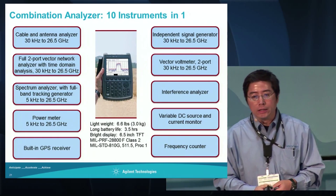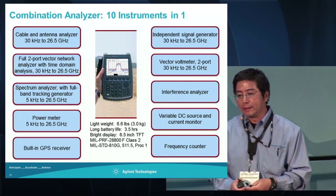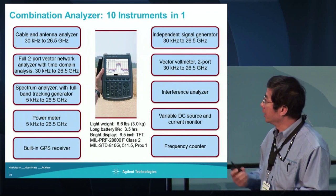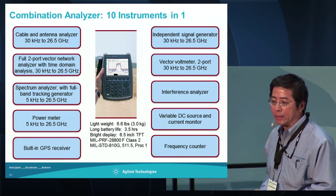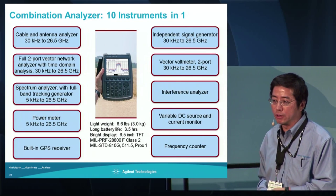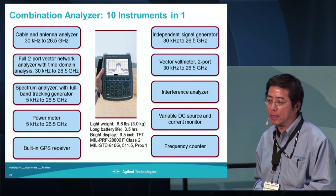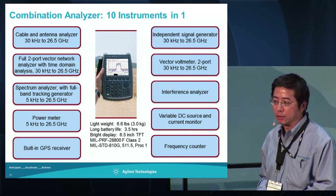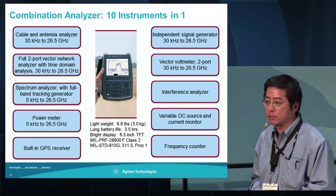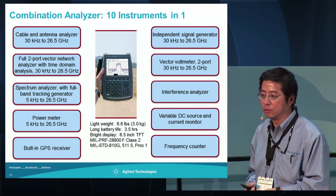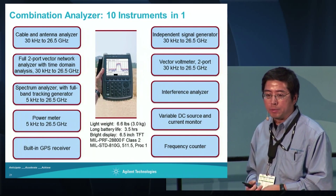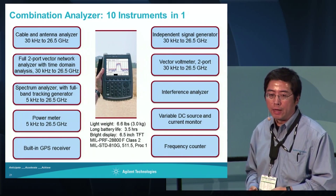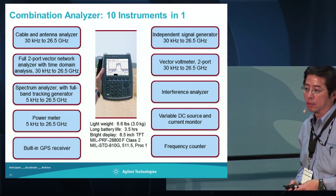Last but not least, on this show floor, this is actually the first time we present our instrument. This is a 26.5 GHz FieldFox cable antenna analyzer, spectrum analyzer, and power meter - all in one. And to show over here, the measurement result is consistent and similar to our PNA and PNA-X. If you have time, feel free to take a look at the instrument.